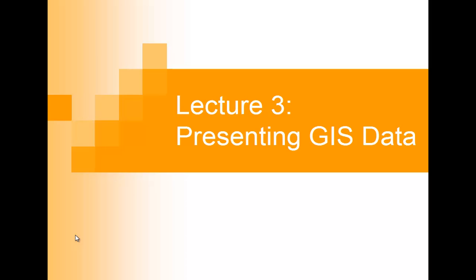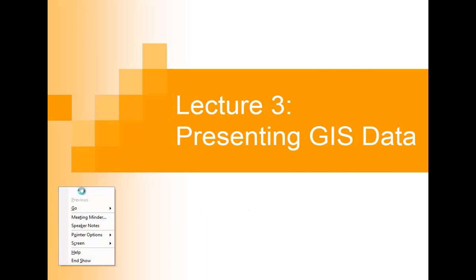Today we're going to talk about how to present GIS data, because a map doesn't just include the actual graphic and the counties or states or whatever we're trying to show — it shows a number of different other things. When we talk about maps, we have what we call a general reference map that shows different features. It's just general reference, meaning there's no particular purpose for it.